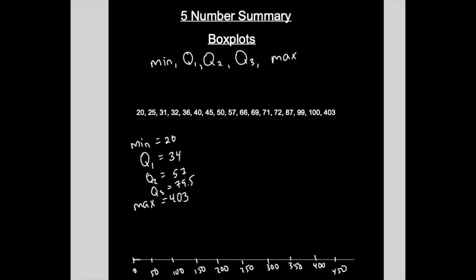Now the five number summary represents the five number summary. And a box plot is also known as a box and whisker graph, a box and whisker plot because it has a box and it has what looks like whiskers.